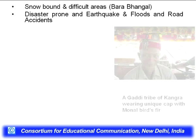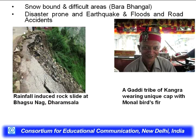The area is also disaster-prone — earthquakes, floods, and road damage. There is rainfall-induced risk. The Himalaya receives the highest per-unit availability of water. Where there is overgrazing, we see problems of erosion, rock falls, land subsidence, and land slips — various land degradation processes. A rainfall-induced rock slide at Bhagsunag, Dharamsala, is an example. A Gaddi tribe member from Kangra wearing a unique cap with Monal bird fur represents local wildlife — Monal is the state bird of Himachal Pradesh.